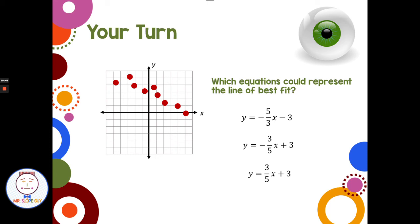For the next example: I see a negative slope from left to right, so it's definitely not the equation with positive three-fifths slope. That leaves two choices with negative slopes. For the y-intercept: negative 3 would have the line crossing way down below, so it's not that one. The most reasonable answer is the line crossing near positive 3. Checking the slope of negative three-fifths — starting at a point, going down 3 and right 5 puts us back on the line. So the equation with slope negative three-fifths and y-intercept 3 is the best fit.